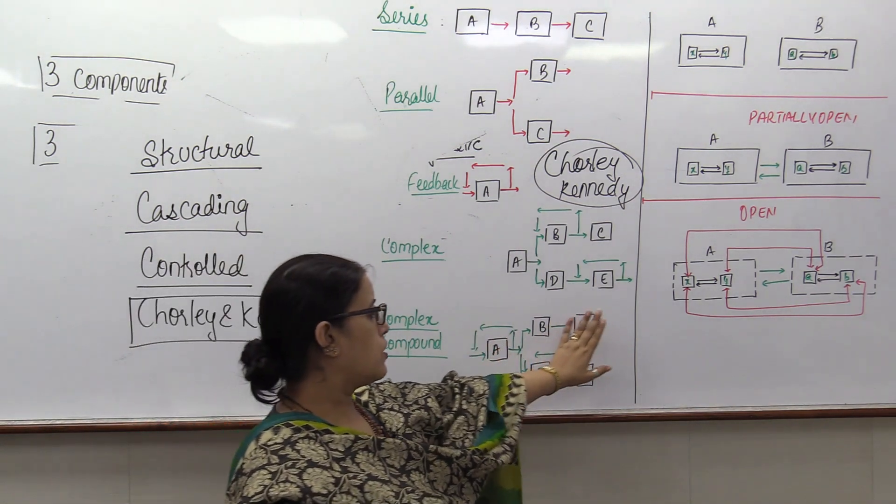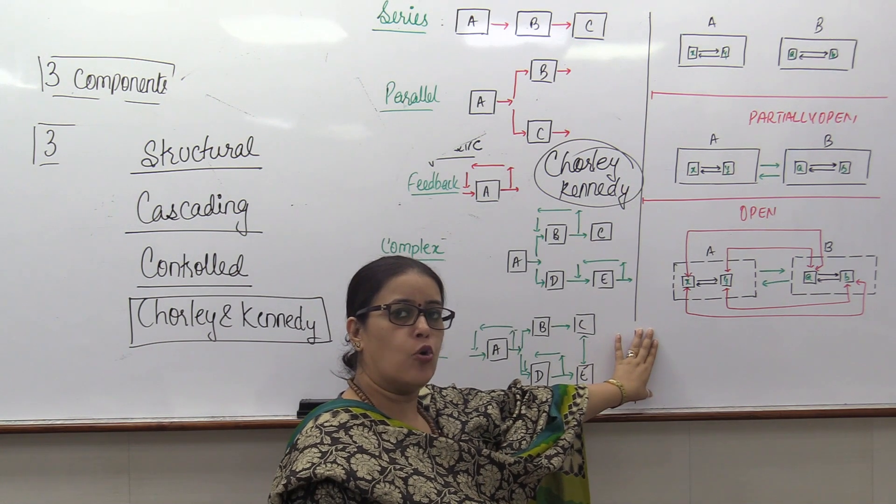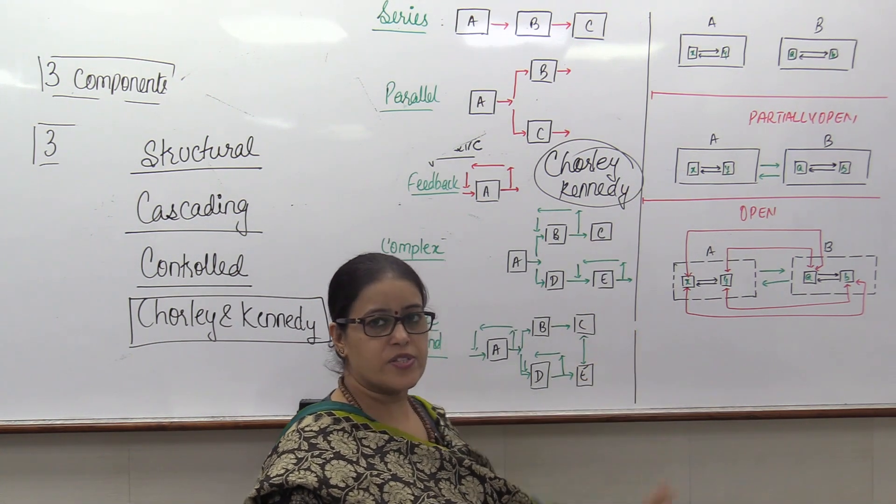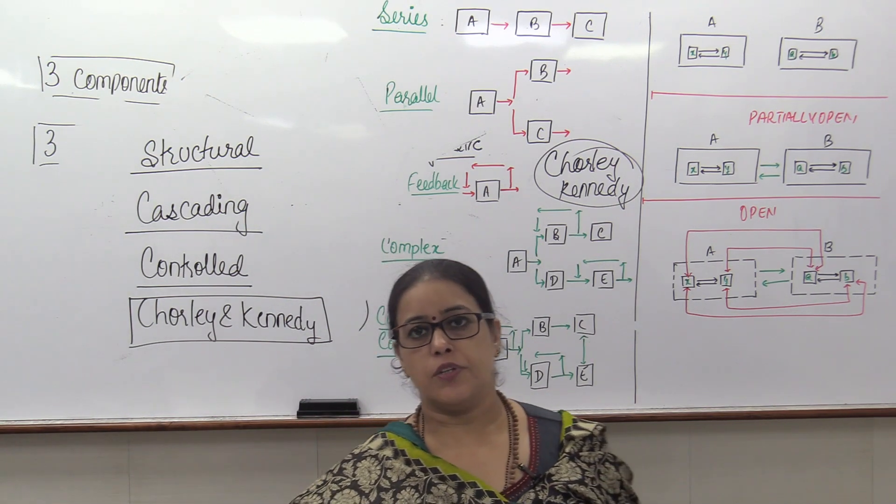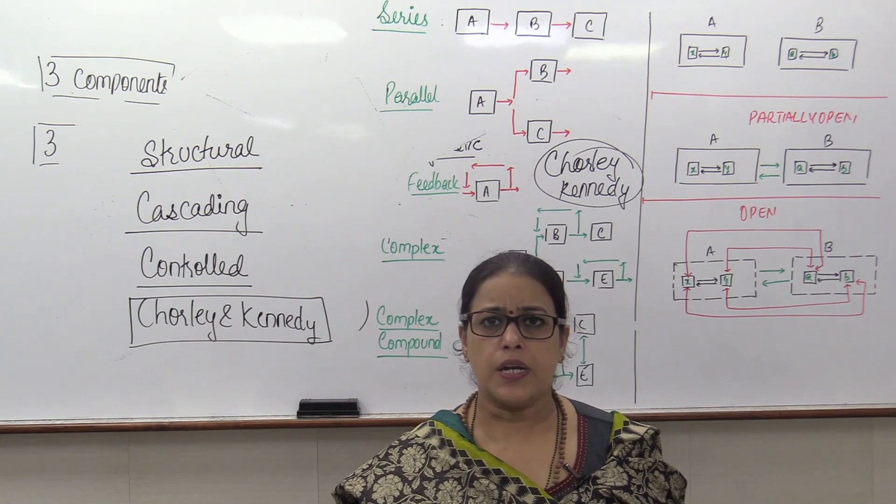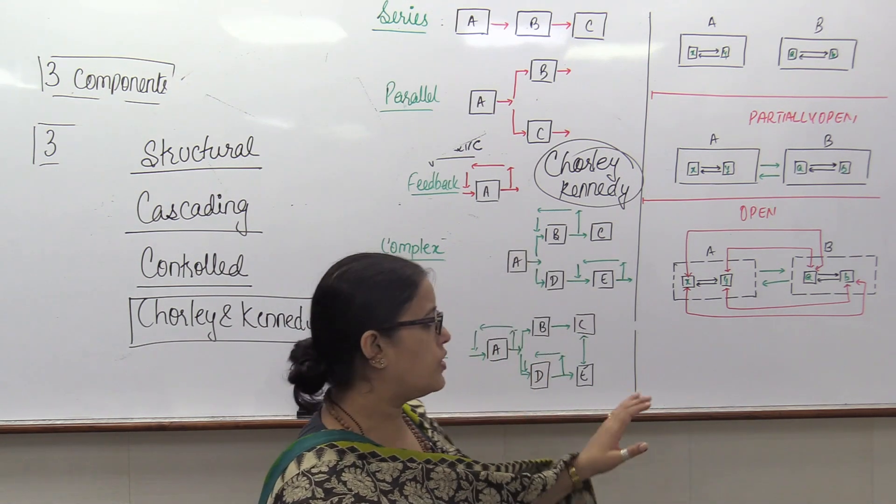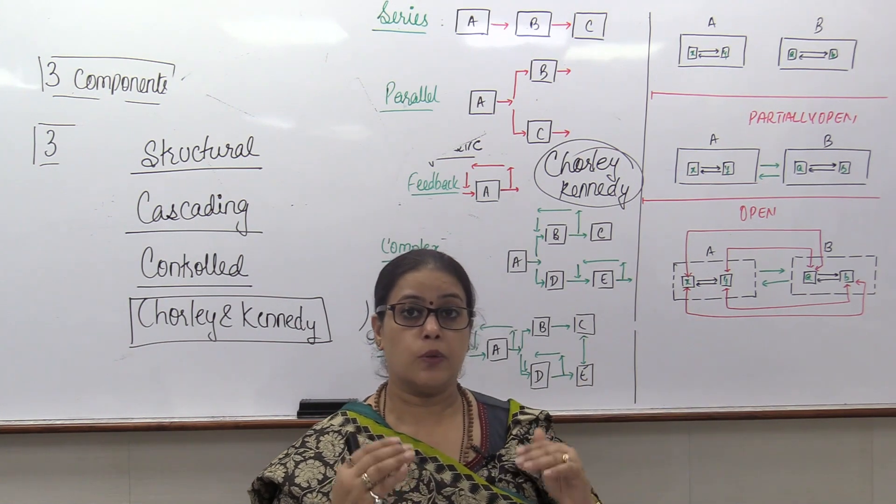If I have to take morphological classification, we say every system can be called structural system. Some systems are cascading in nature. And some systems are controlled systems. And that is given to us by Chorley and Kennedy. Along with it, it is inclusive of closed, partially open, an open system given to us by the same scholars. What is the elementary difference between the two?